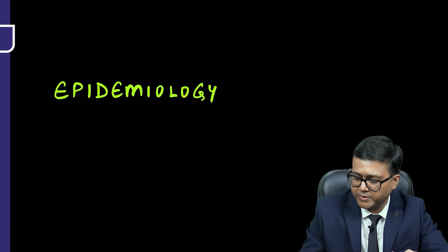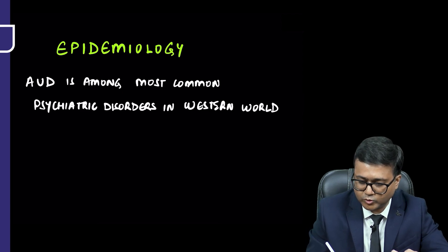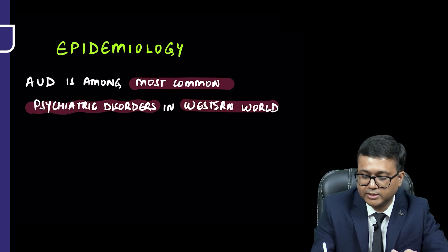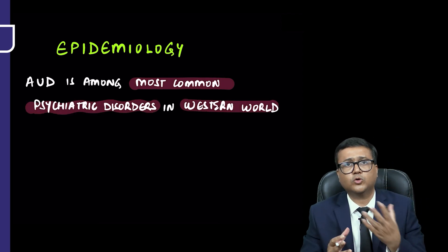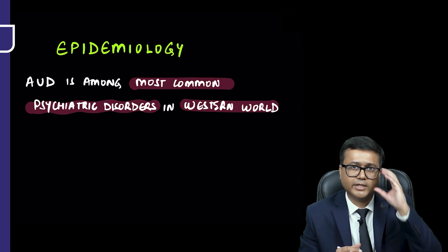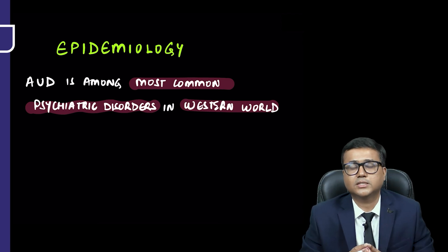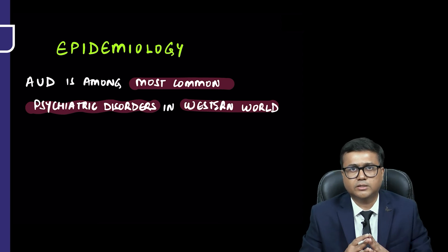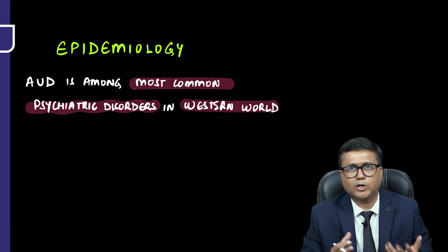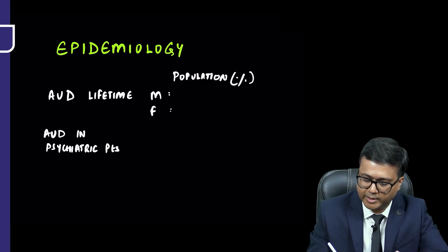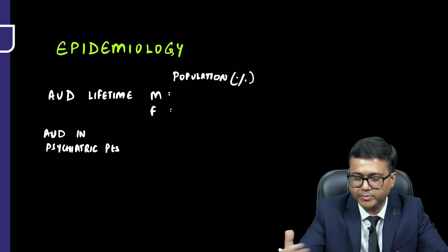Now when we talk about epidemiology, alcohol use disorder is amongst the most common psychiatric disorders in the western world. When we discuss all substances together, in the western world alcohol is the most common substance. Of course, in India it is different — it is tobacco, which we'll discuss.